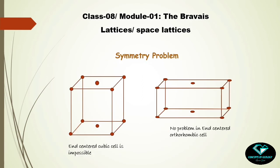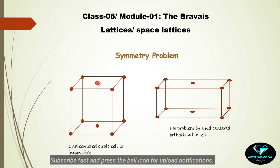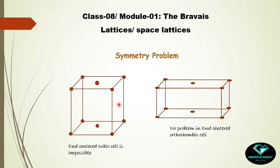Those were examples of redundancy. Now consider the symmetry problem. In cubic arrangements, lattice points have similar environments in any direction, meaning the packing is identical in all three dimensions, resulting in equivalency of all six faces of the cube. When trying to create an end-centered cubic unit cell, only two faces have center points while the remaining four faces lack them. But how can this be possible in a cubic system where all faces are equivalent? Therefore, the end-centered cubic lattice is not possible due to symmetry.